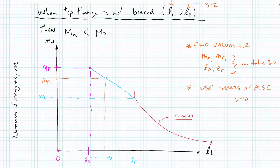Or the second way we can do this is to use the charts in the AISC, the charts 310. Charts 310 graph these curves for every different shape. We can use those charts to go in with our unbraced length, find the nominal capacity, and we're done.